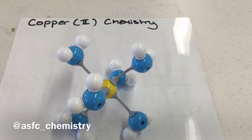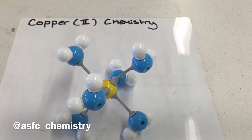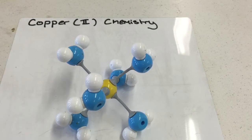Hi everyone, it's Rob at ASFC Chemistry. I'm going to run through some copper 2 chemistry which you need to know for the upper 6 specification. This is very specific to the OCR A-level in chemistry. The AQA specification has a few differences here, so those of you doing AQA, please make sure you look up the slight alternatives that are available.